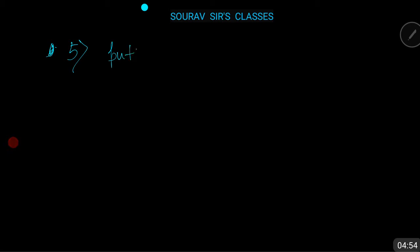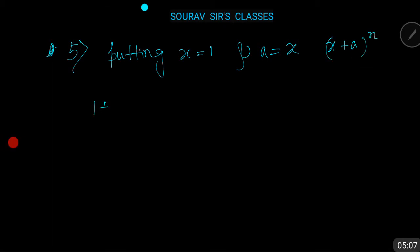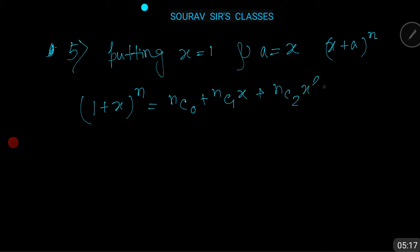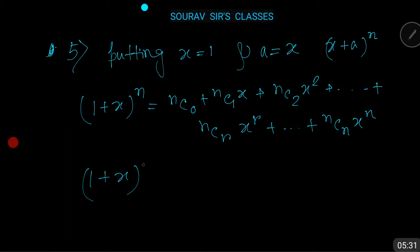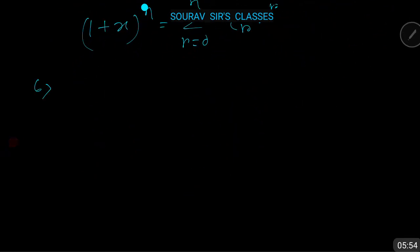Property number five: putting x = 1 and a = x in the expansion of (x + a)^n, we get (1 + x)^n = nC0 + nC1·x + nC2·x^2 + ... + nCr·x^r + ... + nCn·x^n. That is, (1 + x)^n = Σ(r=0 to n) nCr · x^r. This is the expansion of (1 + x)^n in ascending powers of x.